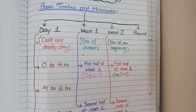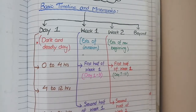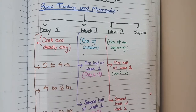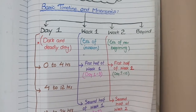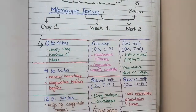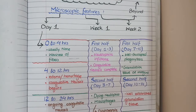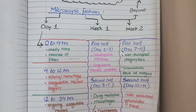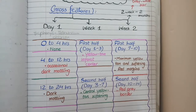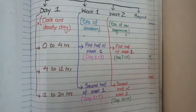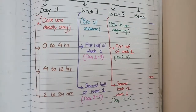In this video we will discuss the pathological changes that occur in myocardial infarction. Firstly we will discuss some mnemonics and a basic timeline, according to which we will discuss each pathological change. Then we will see the microscopic features according to the timeline and then we will see the gross features according to the timeline. So let's start with the basic timeline.